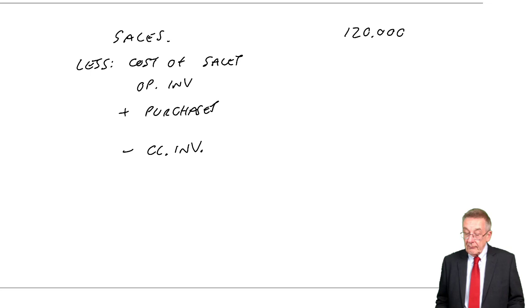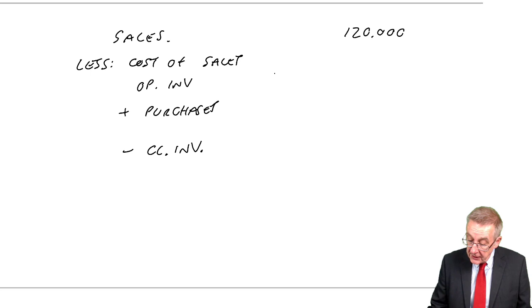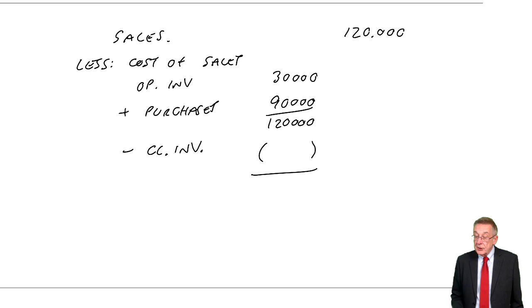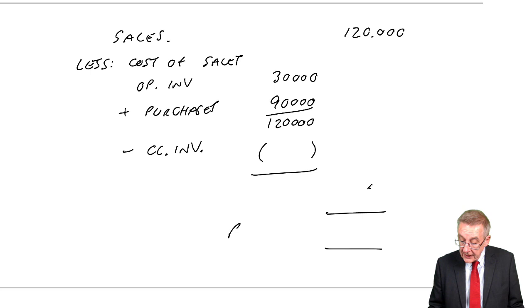Well, we know what the sales are, the sales are 120,000. And the cost of sales, it's always the opening inventory, plus the purchases, minus the closing inventory. Well, I know what the opening inventory was, it was 30,000. We know what the purchases were, 90. So, so far, 120. We subtract the closing inventory, and that gives us the cost of sales, and that gives us the profit, the gross profit.